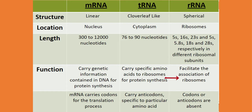rRNA facilitates the association of ribosomes. One last major point: mRNA carries codons for the translation process, while tRNA carries anticodons specific to a particular amino acid. In rRNA, codons or anticodons are absent.